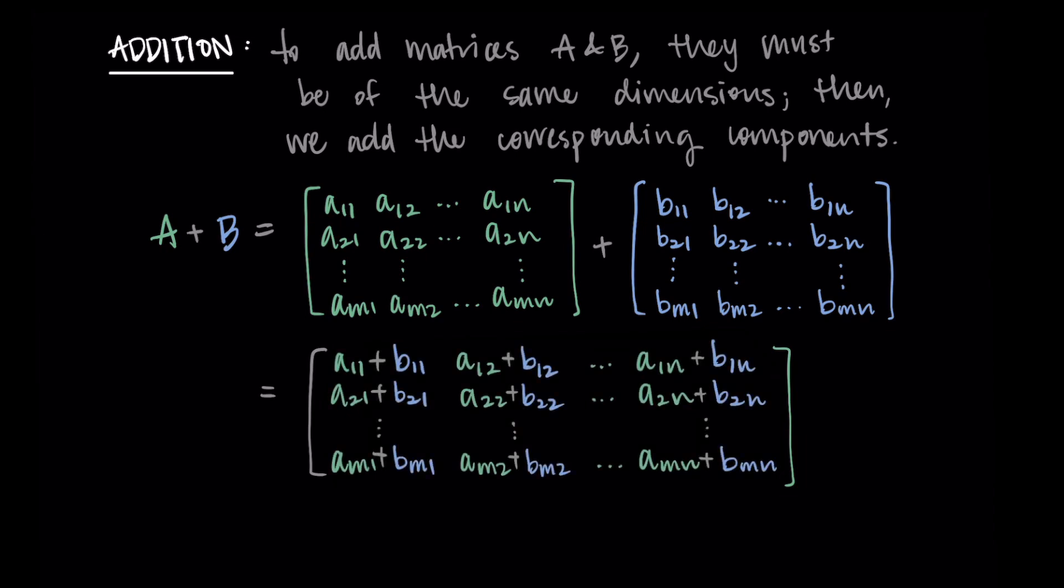Then we would continue on and add all of the corresponding entries. So whatever matches up in each spot is what we add together. This just means that our ijth entry of the new matrix that we get when we add the two matrices together is just a_ij plus b_ij. You just add the elements that go together that have the same indices.